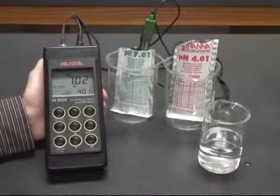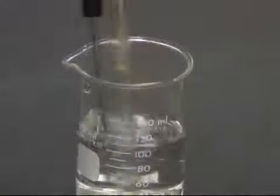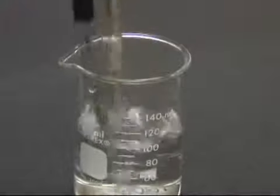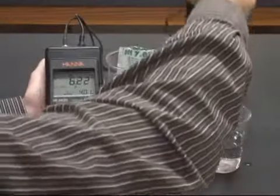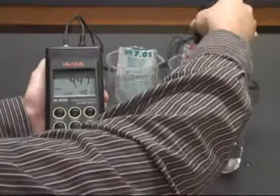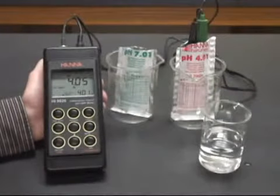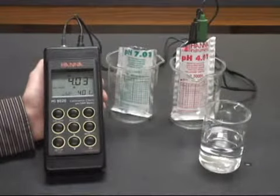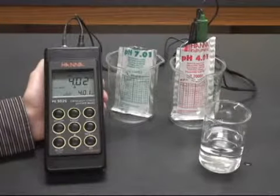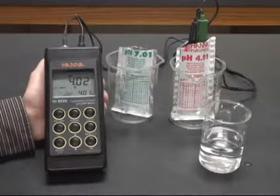You'll notice it asks you for the 4.01 buffer. You're going to take your probes, ideally rinse them very quickly in some DI water, and then put them in your 4 buffer, again mixing them a little bit to get out any air pockets. You'll see the procedure repeat as it asks you to confirm the 4.01 buffer after just a few seconds.